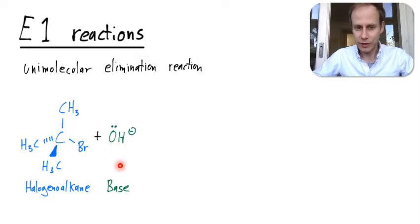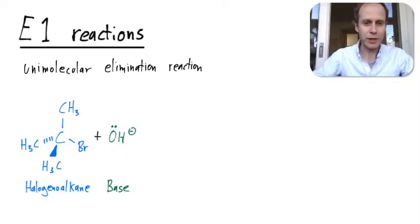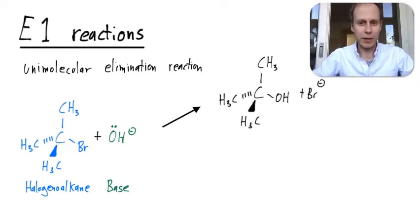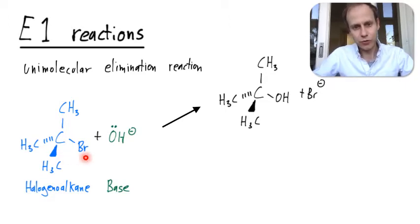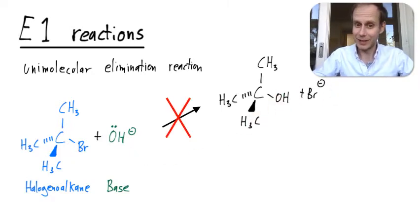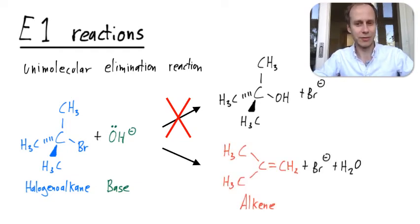We define the reagent as a base, not only a nucleophile, though in principle a base is also a nucleophile. Normally you would expect a nucleophilic substitution reaction to happen — the hydroxide would substitute the bromine and it would split off as a bromide. But in fact that's not what's happening. What happens instead is different.